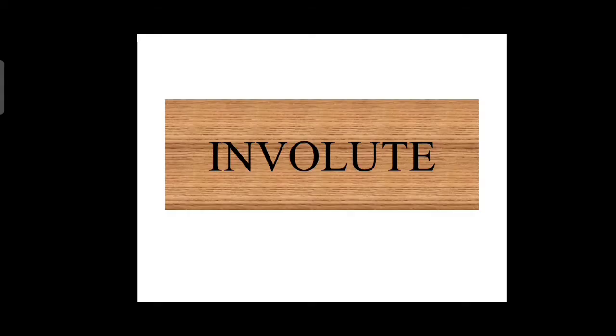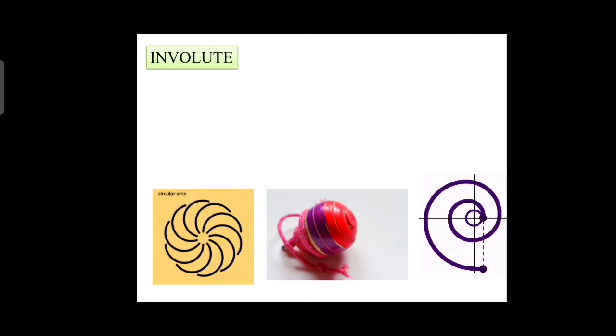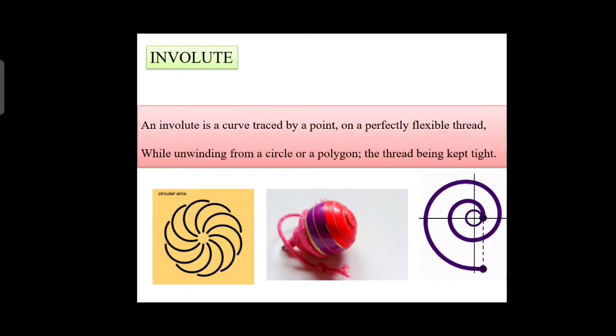Welcome all. In this lecture we are going to discuss about involute. An involute is a curve traced by a point on a perfectly flexible thread while unwinding from a circle or a polygon, the thread being kept tight.